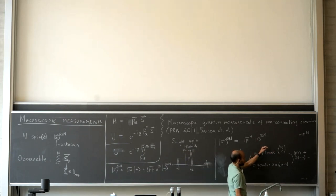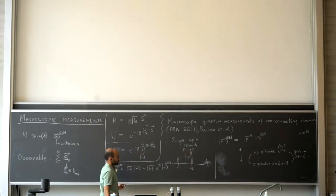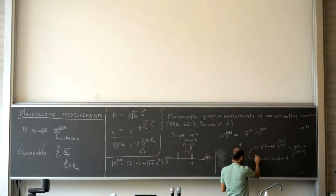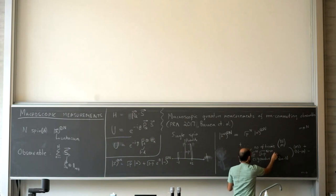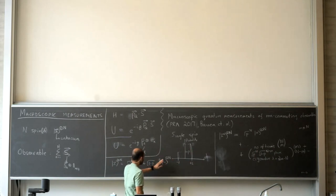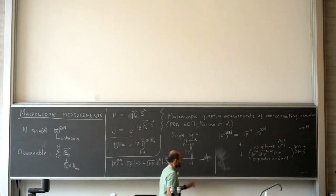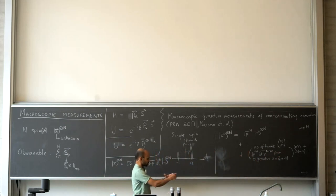Each of the terms inside a block is an orthogonal state, corresponding to different orderings of plus and minus. What I've done is write the full expansion in an orthonormal basis with respect to the product basis of |+⟩ and |−⟩.